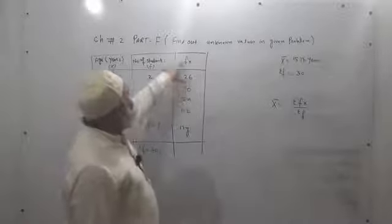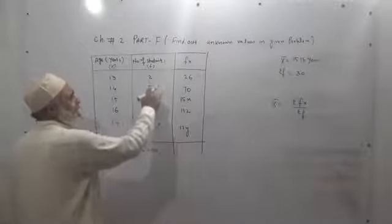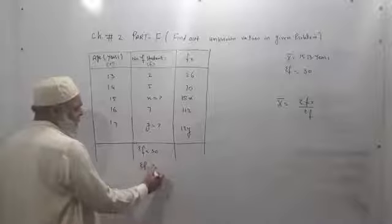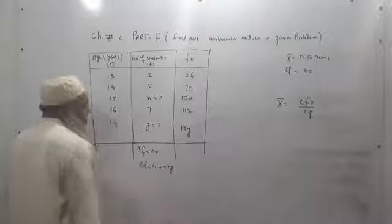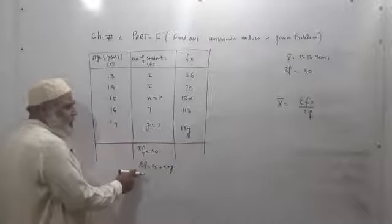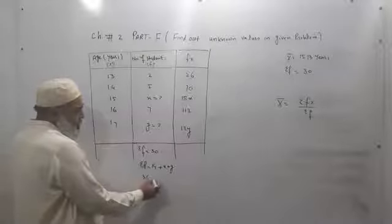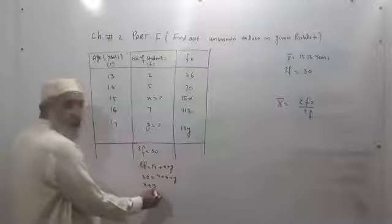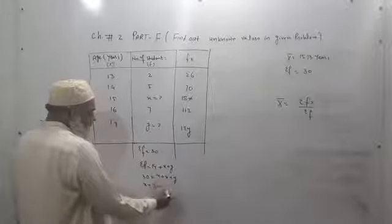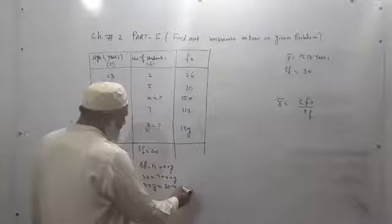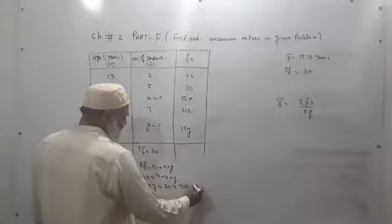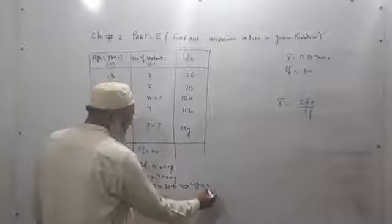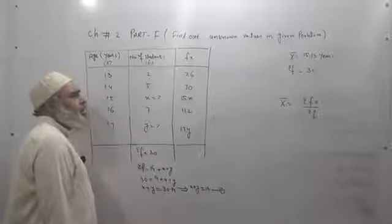Now we have to sum up the frequency and also sum up fx. Now 2, 5, 7, plus 7 is 14, 14 plus 11 equals 25. Sigma f is equal to 14 plus x plus y. Now we put the value of sigma f in this equation: 30 is equal to 14 plus x plus y. So x plus y is equal to 30 minus 14, that is x plus y equals 16. This is our first equation in our problem.